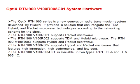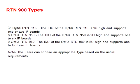Then v100 R005 supports hybrid and packet micro with high integration, high performance, and low cost. The upgraded RTN 900 v100 R005C01 is available in two types: RTN 950A and RTN 9051C. In RTN 950A, we don't have protection for the main switching card, but it has more functionalities. Similarly, RTN 9051C has more functionalities but uses a different card than the RTN 910.